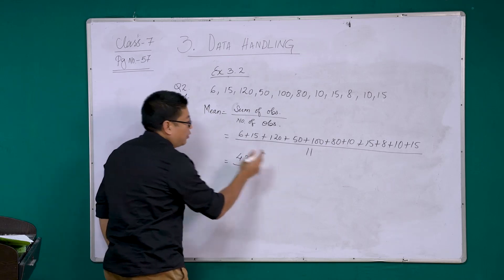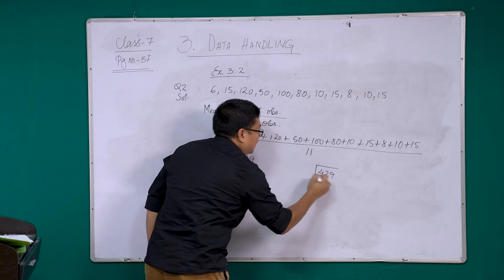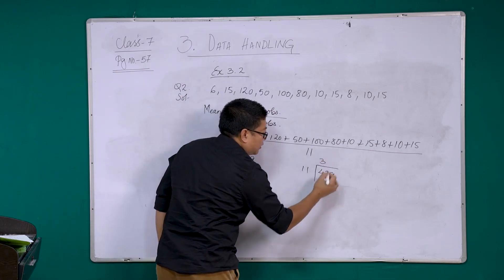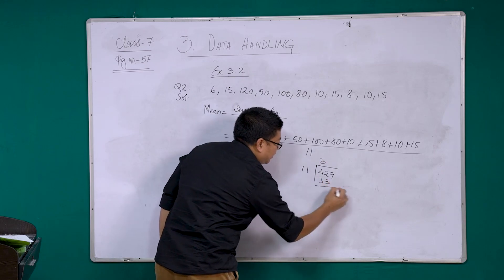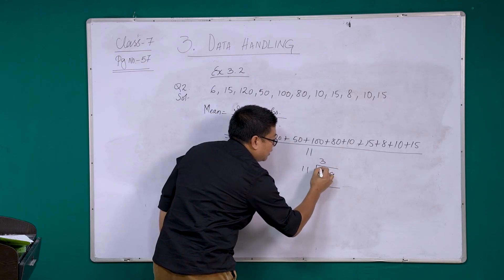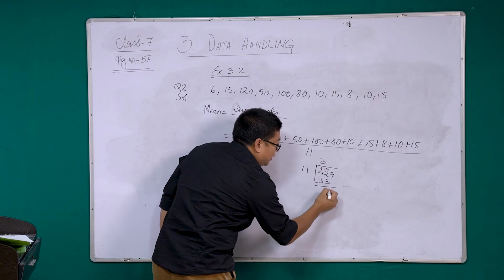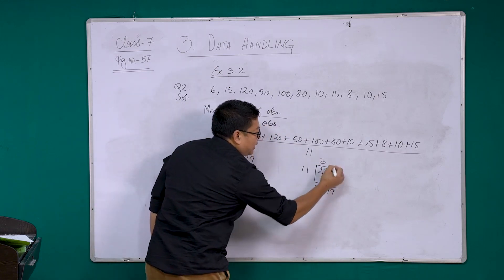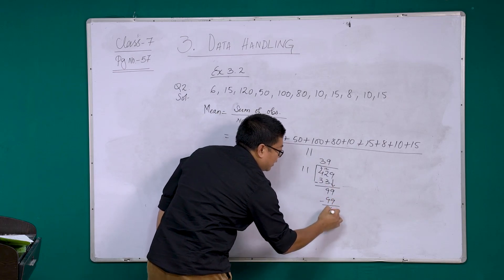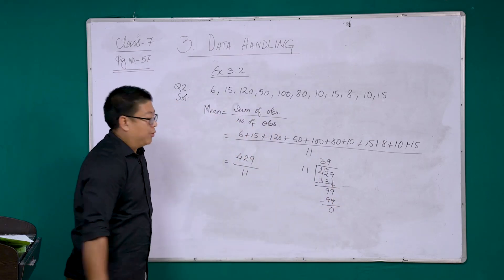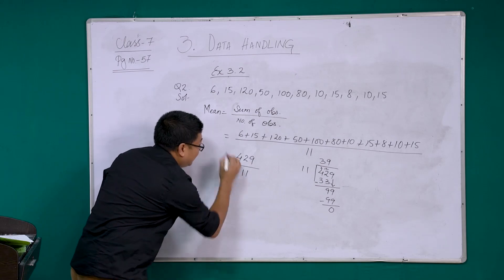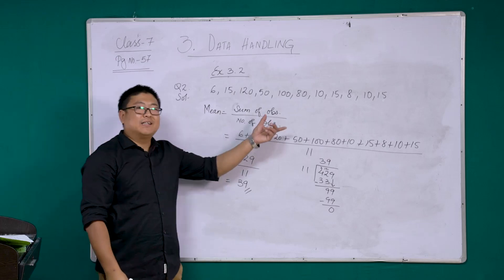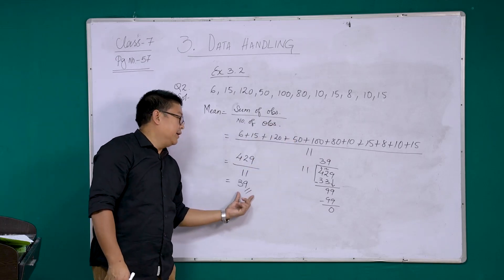Now let's divide 429 by 11. 11 into 39 gives us: 11 into 33 is 33, subtract to get 99, and 11 into 9 is 99, remainder 0. So your mean is 39. The mean for this score is 39.